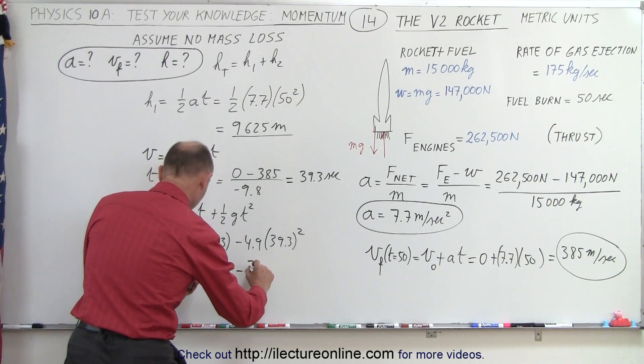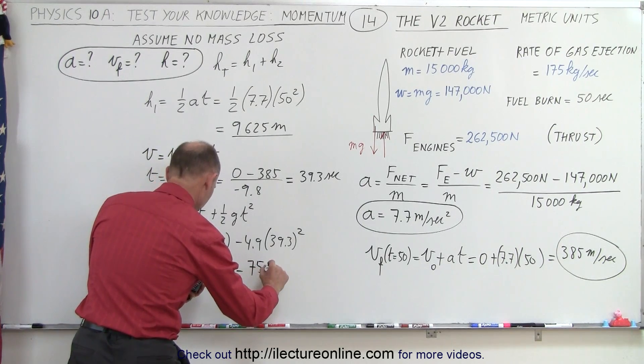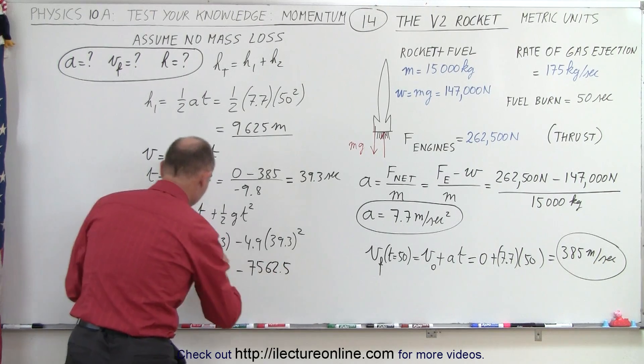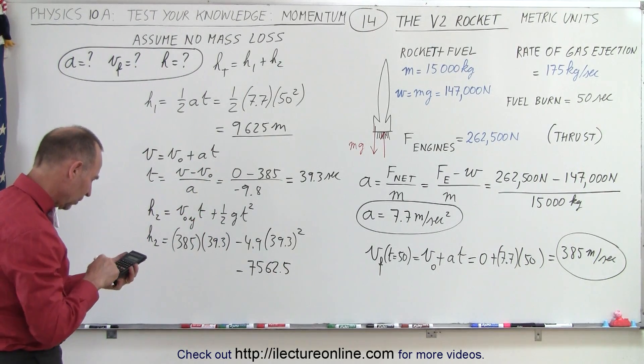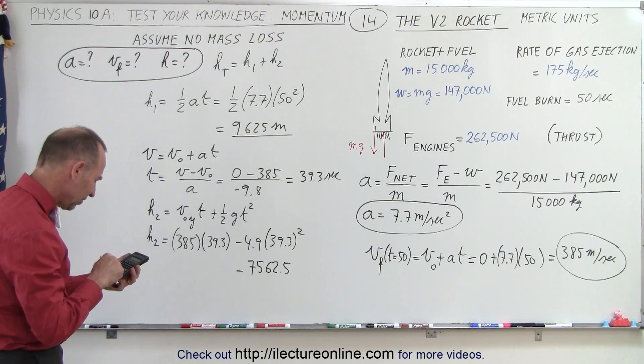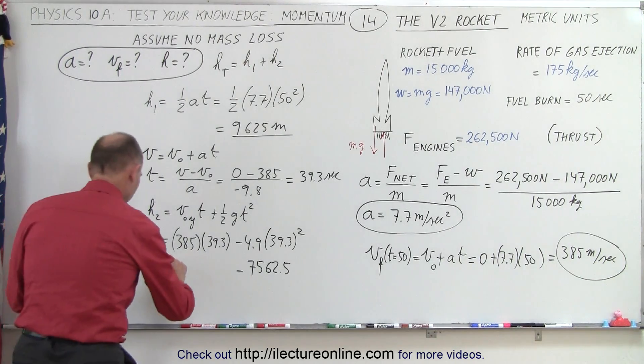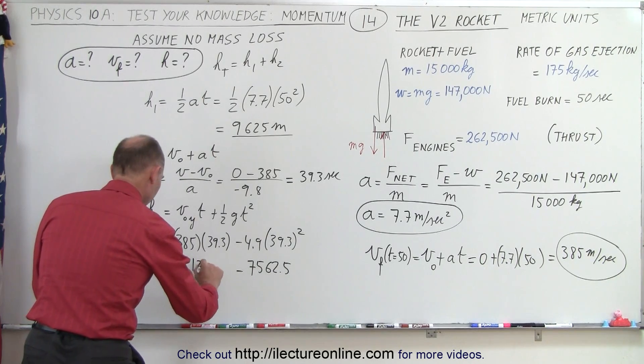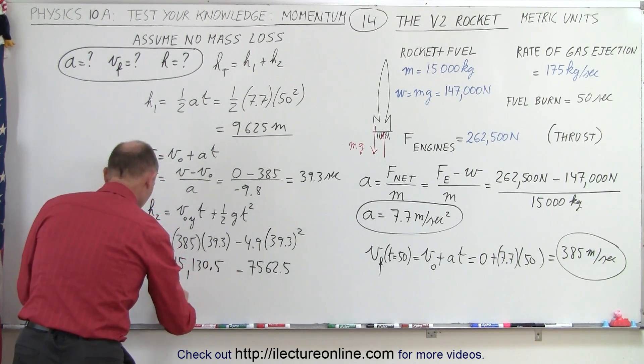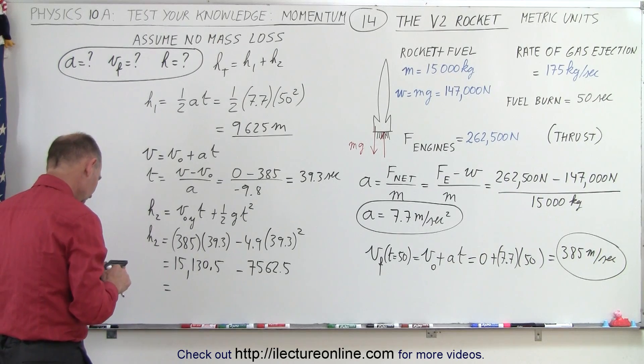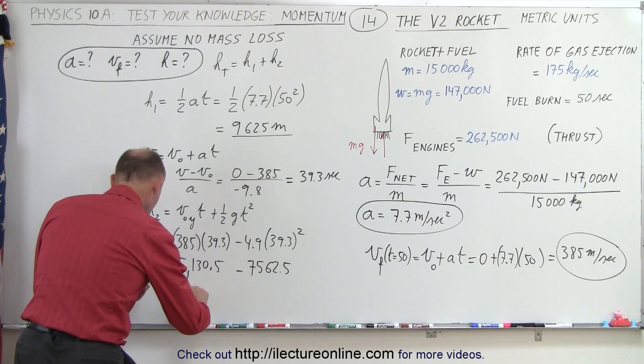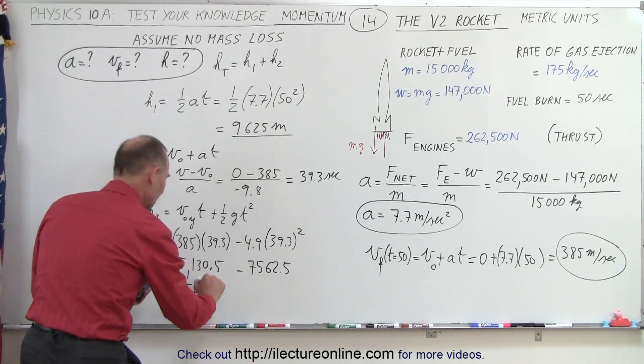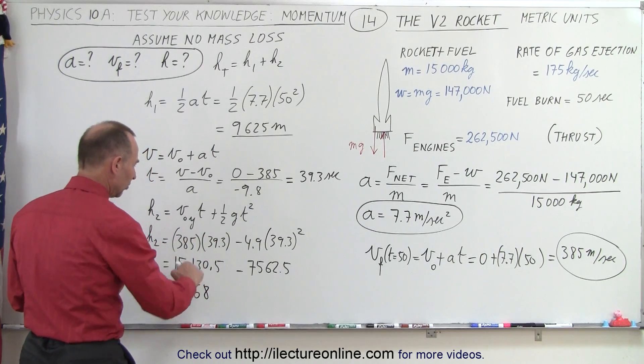So minus 7,562.5. And then we add to that 385 times 39.3, which is 15,130.5. So that would be equals, and that's a total of 7,568 meters.